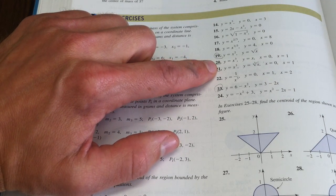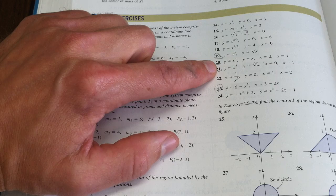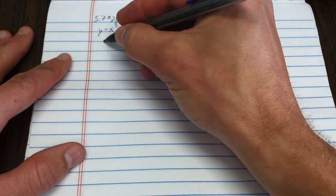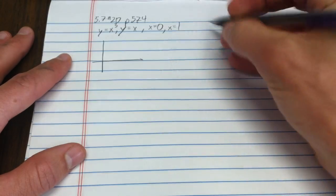That has the equations y equals x cubed, y equals x, x equals 0, and x equals 1. Here we go. There are my equations. We're going to graph that.